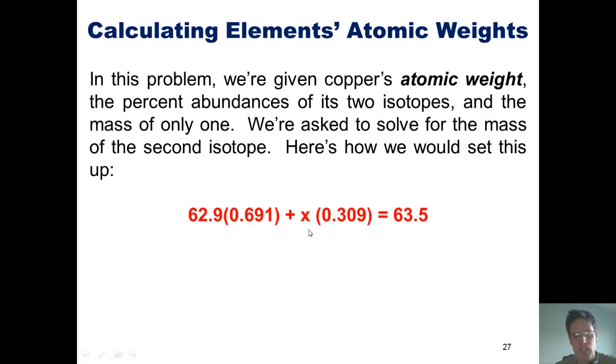Now, because we don't know the individual atomic mass of one of those isotopes, we set it equal to X. Then all we have to do is solve for X. I'll go ahead and let you do this on your own.